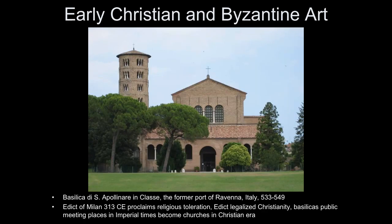We're looking at a basilica made out of brick — not wood like the ones usually built in Roman cities. This one is in Ravenna, Italy, built in the 6th century. Remember, with the Edict of Milan in 313 CE proclaiming religious toleration and legalizing Christianity, basilicas became public meeting places and then churches. Artists and architects took previous forms and reused them — it's easier to change ideas than it is to change art.